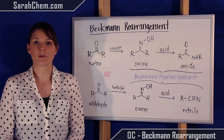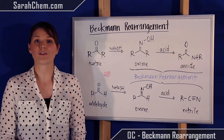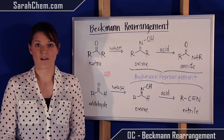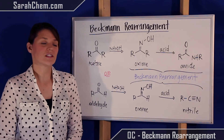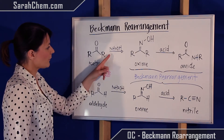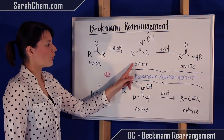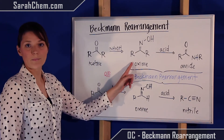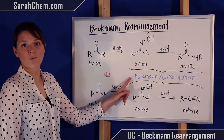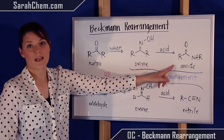In the Beckman, the ultimate goal is to take an oxime and either convert it over to an amide or to a nitrile. So we take a look at this case here — we start out with a ketone. We're able to use hydroxylamine to convert that ketone over to an oxime. Then this oxime can now undergo the Beckman rearrangement and it will be converted into an amide.